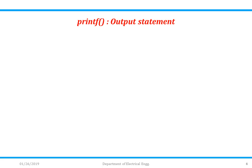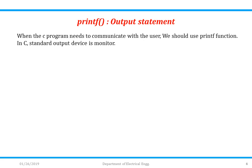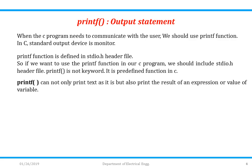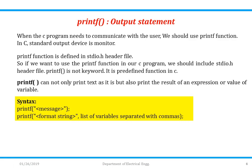Now we will discuss the output statement in C, i.e. printf. When a C program needs to communicate with the user, we use printf. The standard output device in C is a monitor. The printf function is defined in the stdio.h header file, where std stands for standard and io stands for input/output. So we need the instruction #include stdio.h. Remember that printf is not a keyword; it is a predefined function in C. printf can print text as-is, but also prints the result of an expression or the value of a variable.